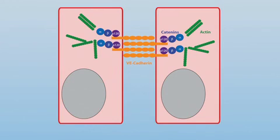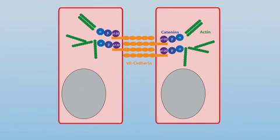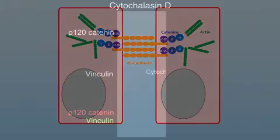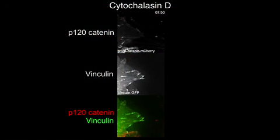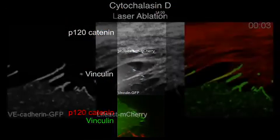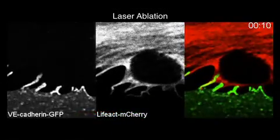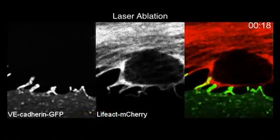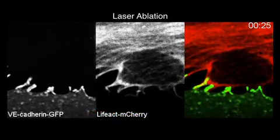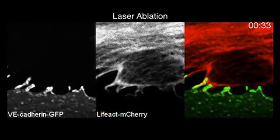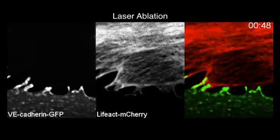Focal adherence junctions were kept under tension by their attachment to radial actin bundles. Uncoupling these adhesions from the cytoskeleton using either low doses of cytochalasin D or laser ablation released this pulling force, resulting in the rapid displacement of vinculin-containing junctional complexes.